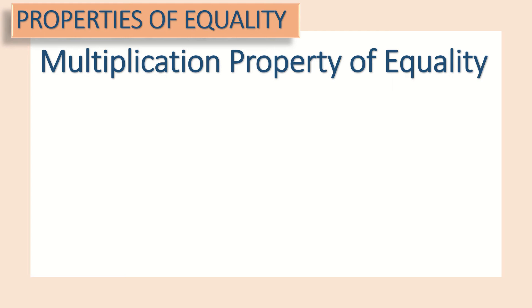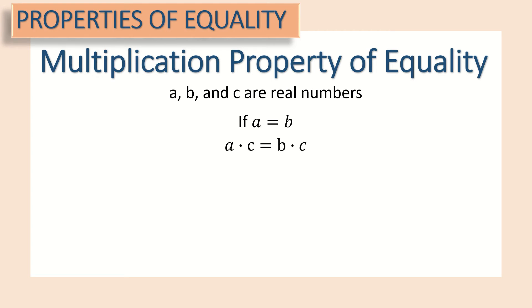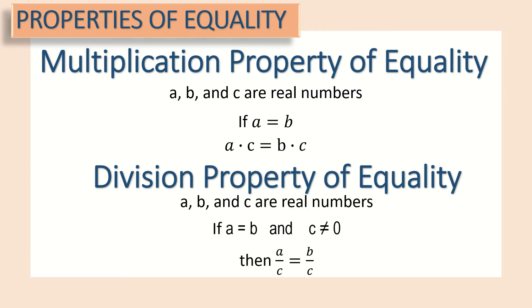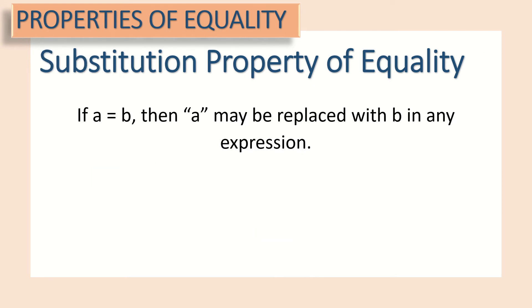Next, the multiplication property of equality: for real numbers a, b, and c, if a = b, then a × c = b × c. Next, the division property of equality states that if a = b and c ≠ 0, then a ÷ c = b ÷ c. We also have the substitution property of equality, which tells us that if a = b, then a may be replaced with b in any expression.